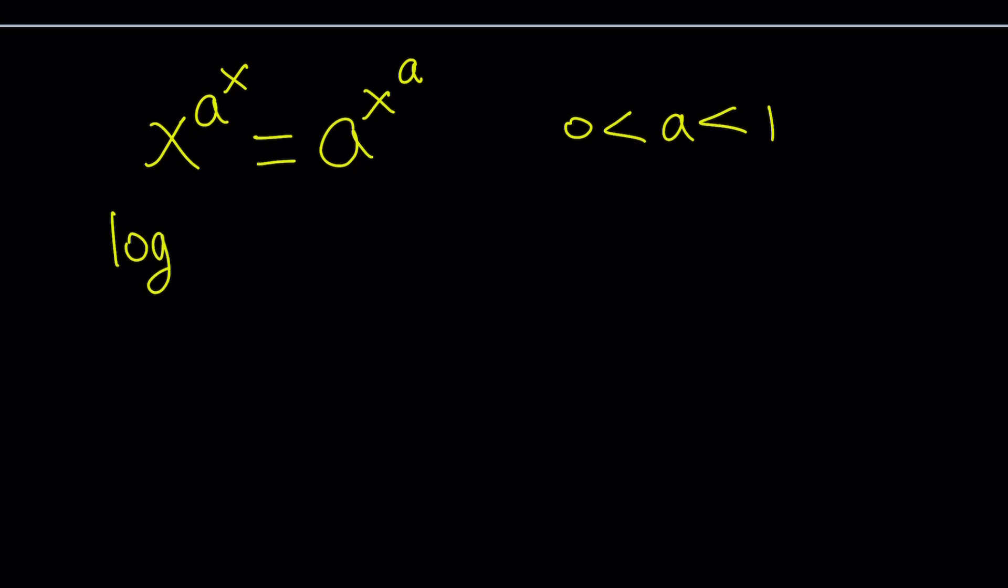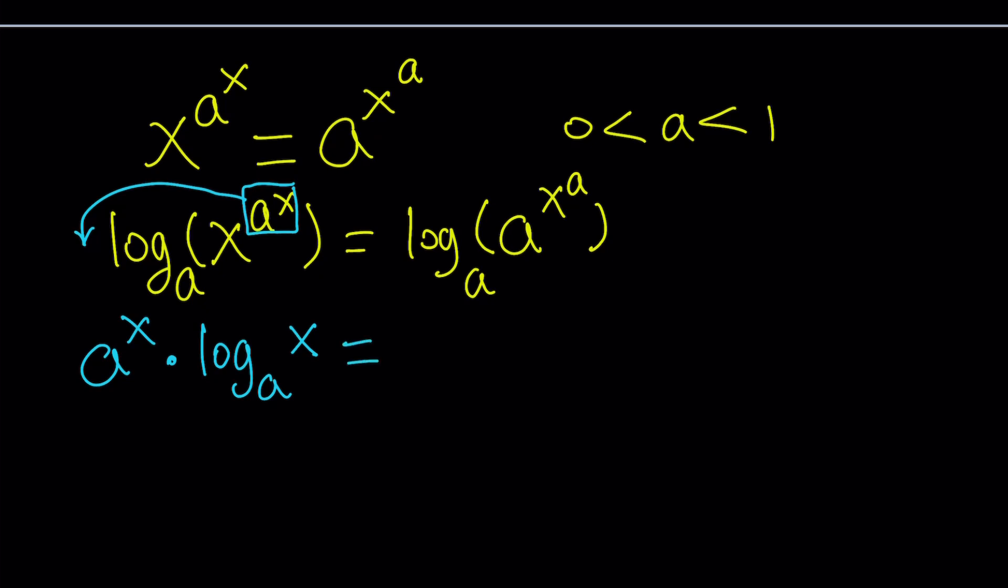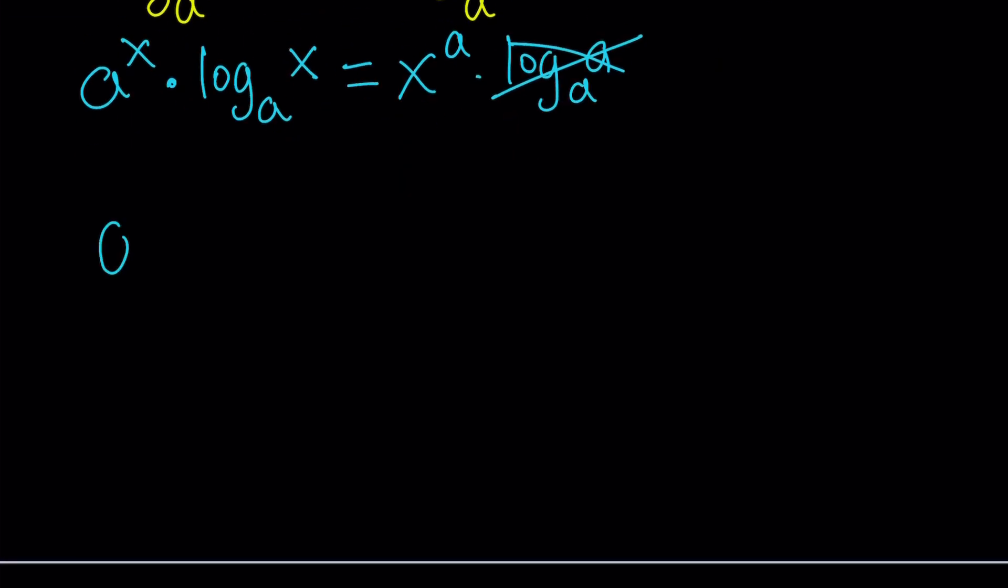Let's go ahead and log both sides. I'm going to use base a. I'm going to use parentheses because some folks are confused when parentheses aren't used. Properties of logs give us a lot of good things, including this one. When you have the power of something being logged, you can go ahead and move it to the front. So, the power property allows us to move the a to the x to the front, and we end up getting a to the x times log x with base a. And then, the right-hand side, same thing, x to the a times log a with base a. But that's one, so you don't have to worry about it.